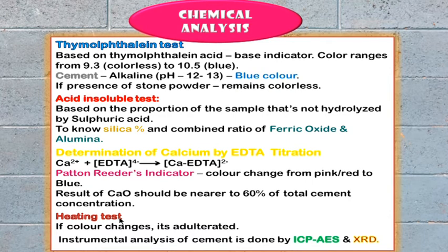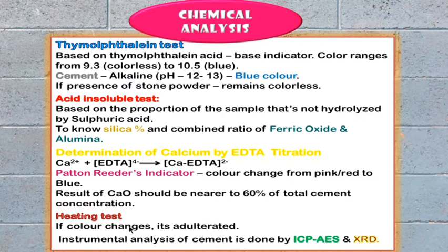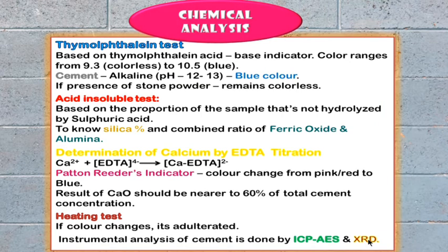Heating test: approximately one gram of the sample is taken on a steel plate and heated for 20 minutes. If there is a change in color from the normal greenish gray, the cement is adulterated; if there is no change, it is good quality cement. Instrumental analysis can also be done using ICP-AES (Inductively Coupled Plasma Atomic Emission Spectroscopy) and XRD (X-ray Diffraction), which identifies the crystalline phase elements.